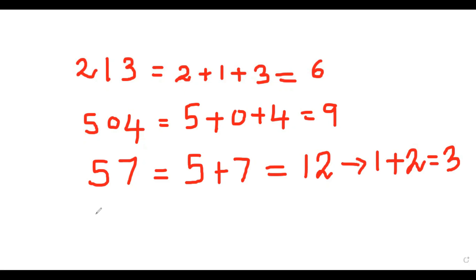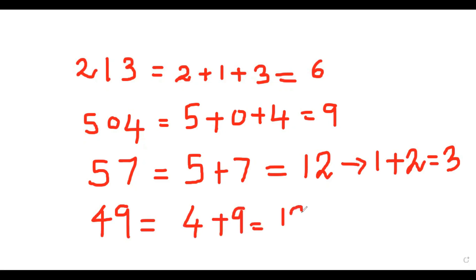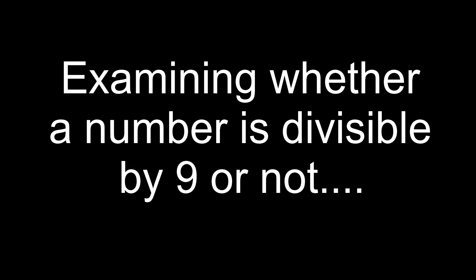Another example: 49. 4 plus 9 is 13. Further, 1 plus 3 is 4. So 4 is the Digital Root of 49. Now we are going to check whether a number is divisible by 9 or not by using the idea of Digital Root.